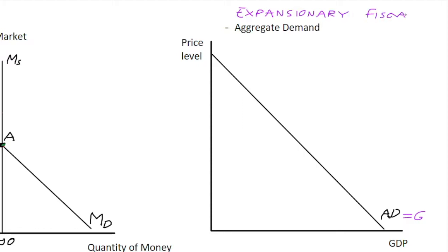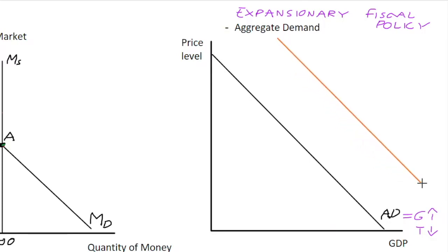they would increase spending and reduce taxes, or some kind of combination of these. Expansionary fiscal policy tends to be increases in government spending or tax reductions. What should happen is the aggregate demand curve should shift rightwards, going from AD1 over to AD2 on the right hand side of our model.